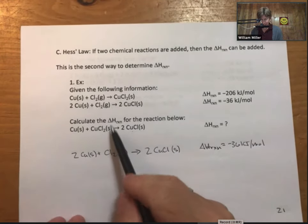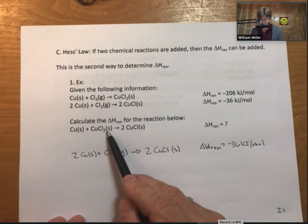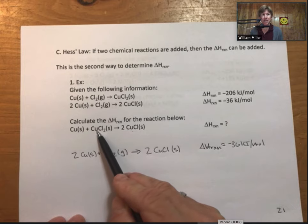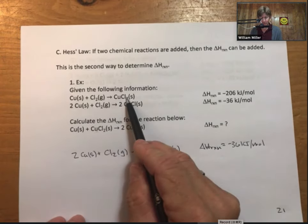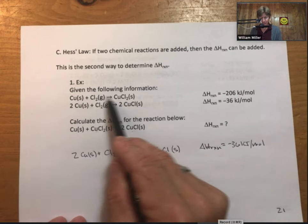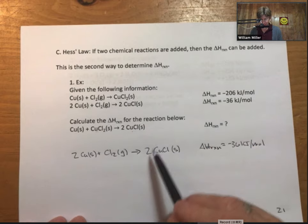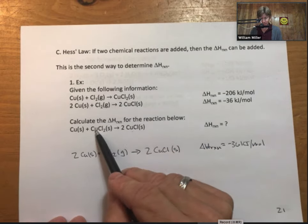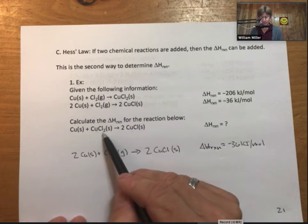Then I can see that I have CuCl2. That is my reactant in the reaction that I'm trying to make and determine its delta H. And it's a product up here. That means that I'm going to have to flip the reactants and products and change the sign of delta H. Let me see. So the coefficients are the same. I'm keying off this because it's only in one of these reactions up here.